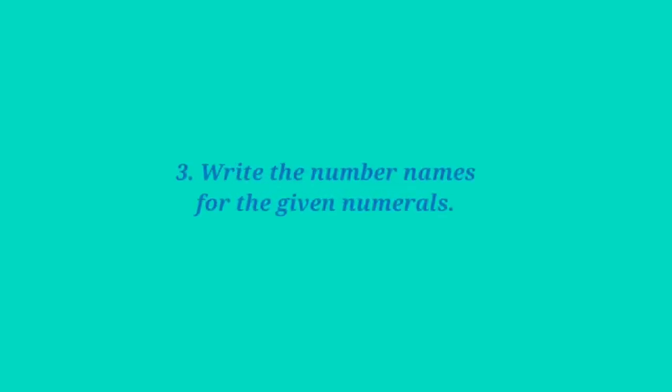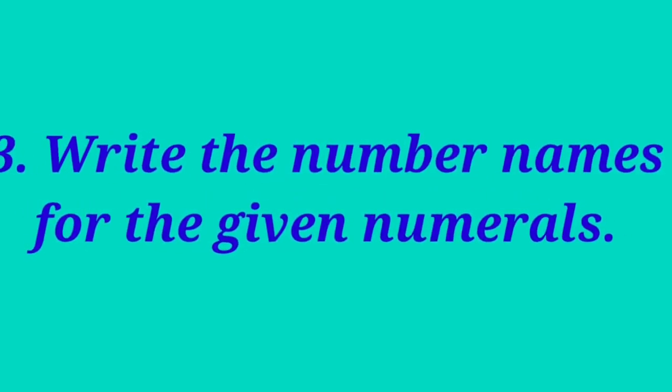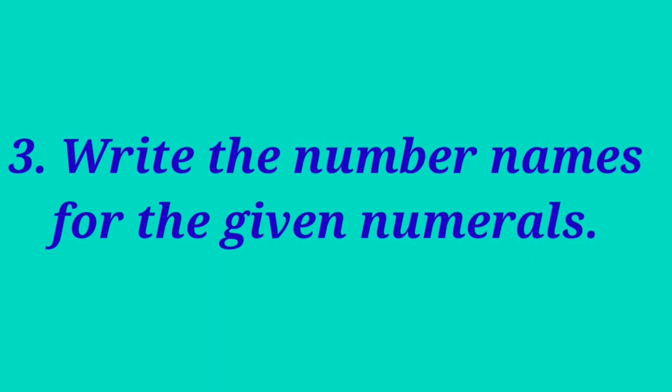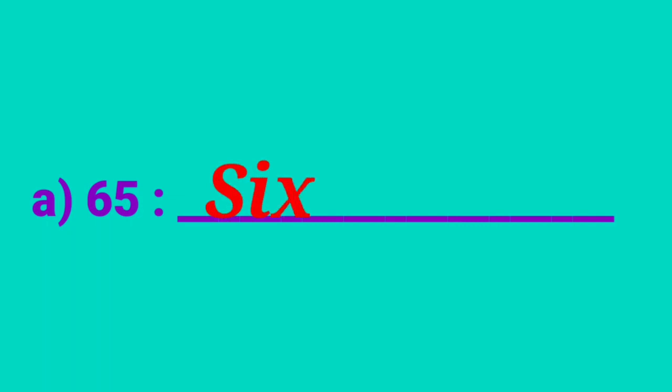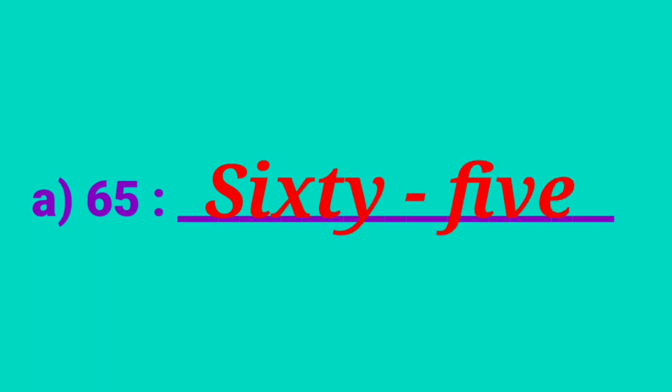Let us do the 3rd bit children. Write the number names for the given numerals. Here they gave numerals and you have to write number names. First one — what is the number? 65. The number name of 65 is S-I-X-T-Y F-I-V-E. You should not write it as 65; it is sixty-five.